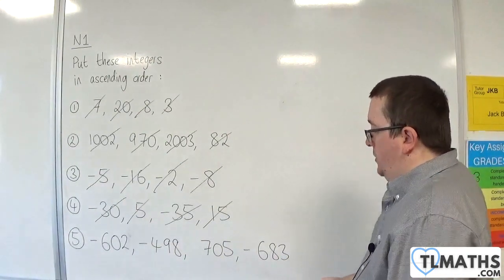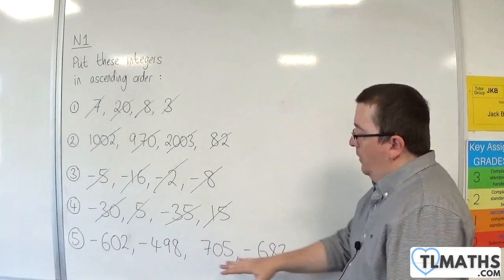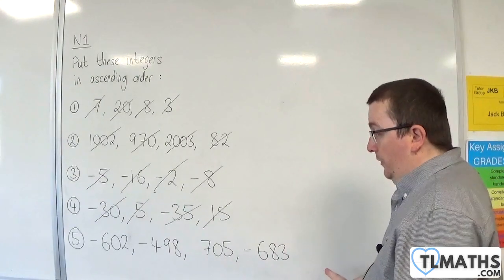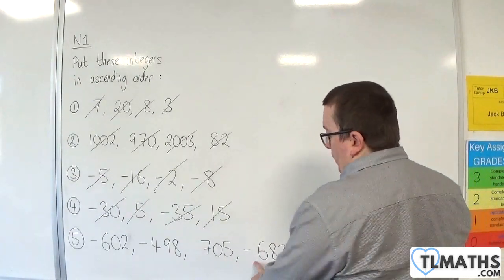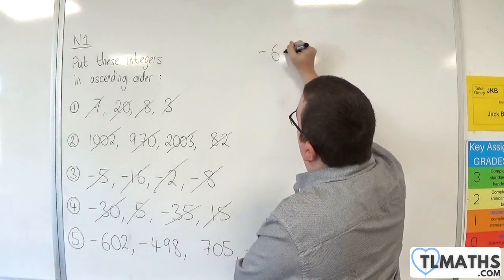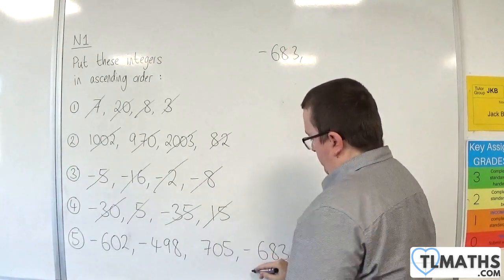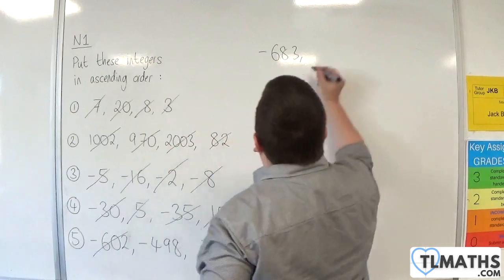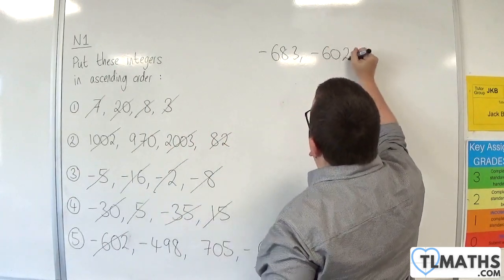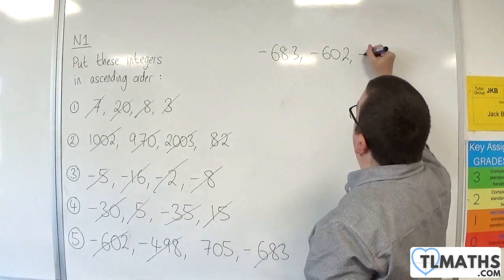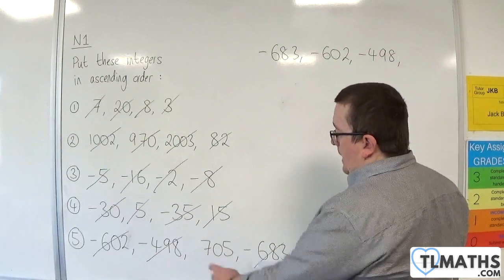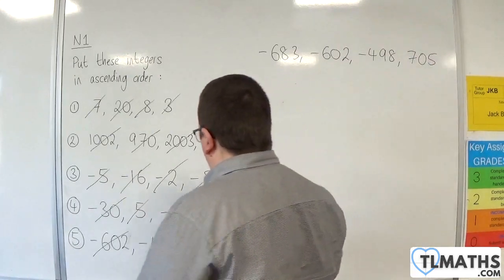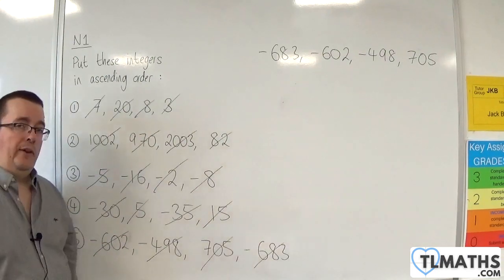Last but not least, we've got some positive and some negative three-digit numbers. Focus on the negative ones first, go for the most negative, which is minus 683. We've got two negatives left over, so the most negative now is minus 602, then minus 498, and then 705. We've now put each of these into ascending order.